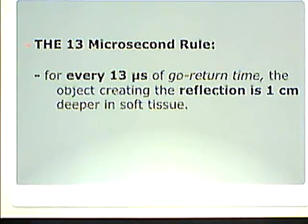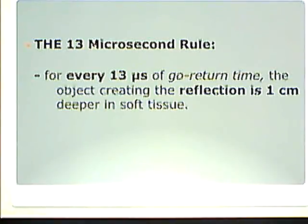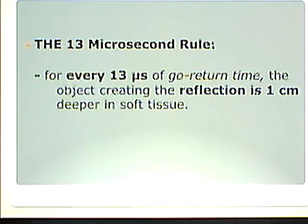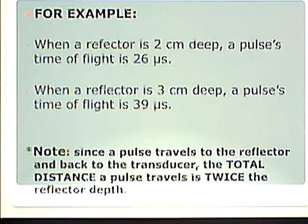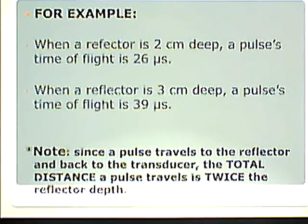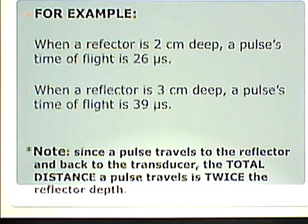The 13 microsecond rule: for every 13 microseconds of go-return time, the object creating that reflection is 1 centimeter deep in soft tissue. So for every 13 microseconds, reflector depth is 1 cm. When a reflector is 2 cm deep, the time of flight is 26 microseconds. When a reflector is 3 cm deep, the time of flight is 39 microseconds. Since a pulse travels to the reflector and back, the total distance a pulse travels is twice the reflector depth.